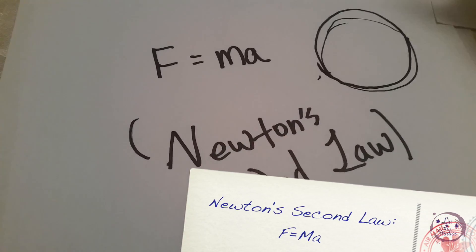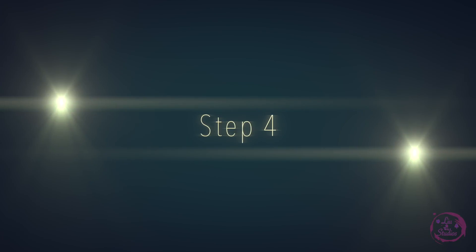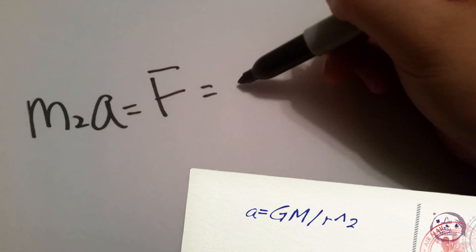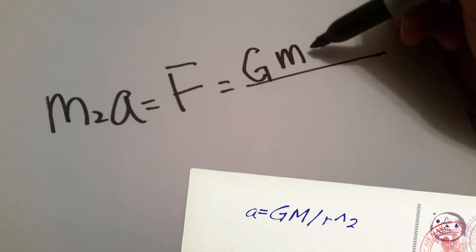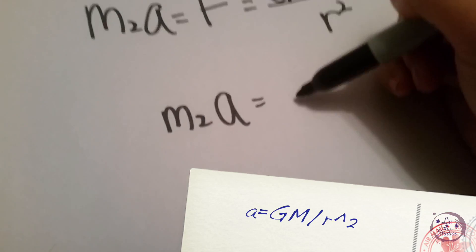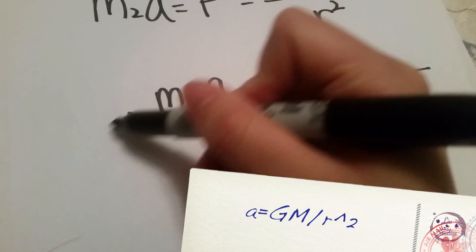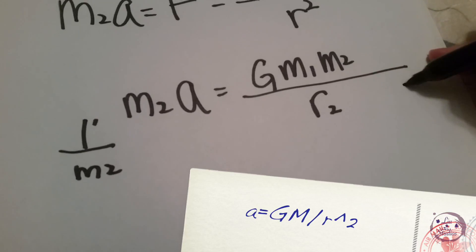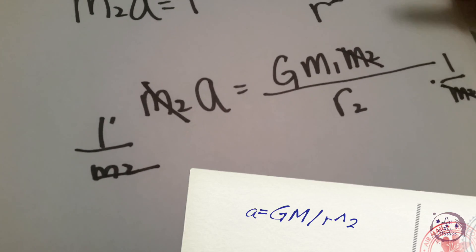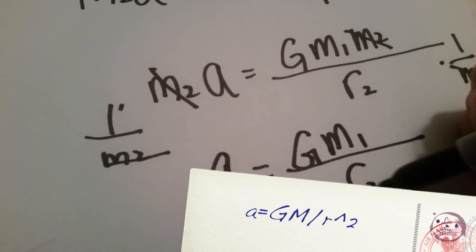Recall Newton's second law: F = ma. Then if the gravitational force would be F = G(M1)(M2)/r², then ma would equal G(M1)(M2)/r². If you then divide both sides by M2, you get the acceleration of gravity on the planet.